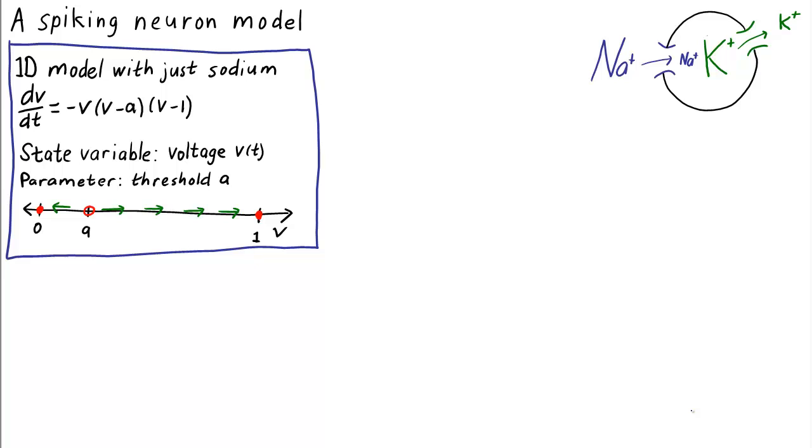We want to bring the voltage back down so that the neuron can be ready to listen to more input. To allow the voltage to turn around, we must add another state variable so that we have a two-dimensional differential equation.